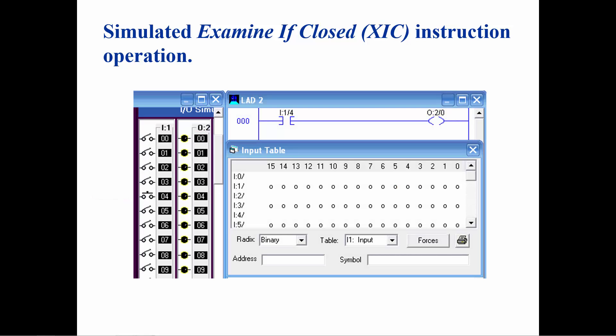When the switch is open, a 0 is placed in the input table. The examine if closed instruction will then not allow rung continuity, just like an open relay contact will not allow current to flow.